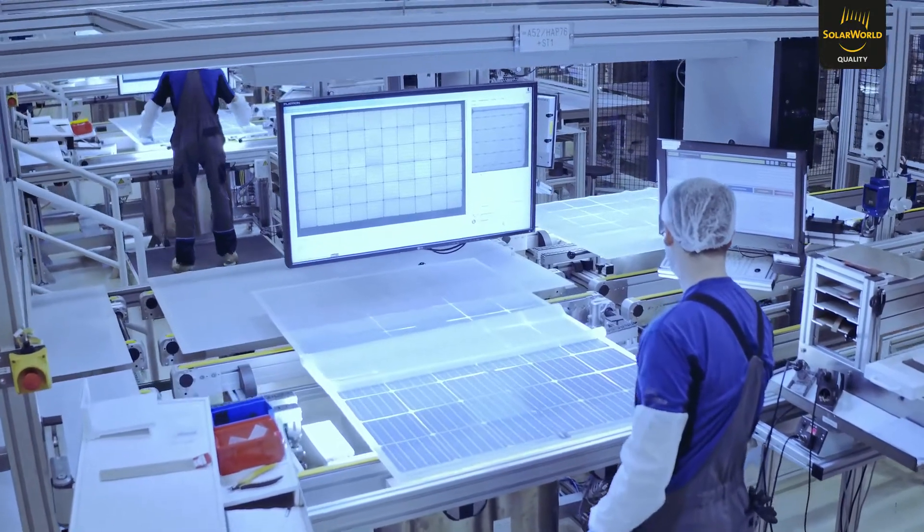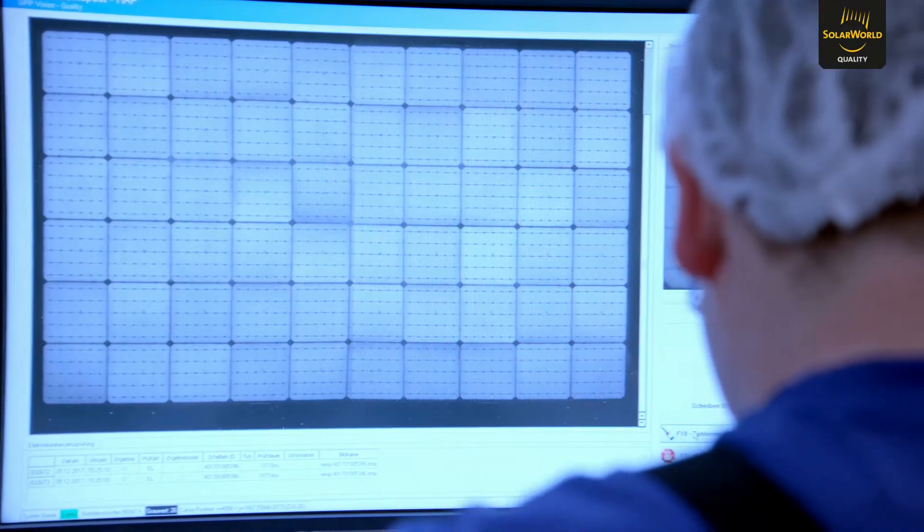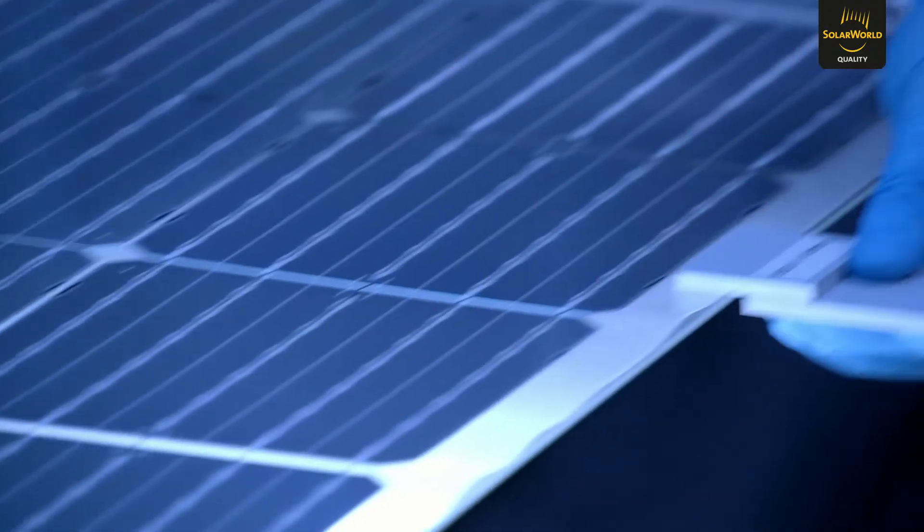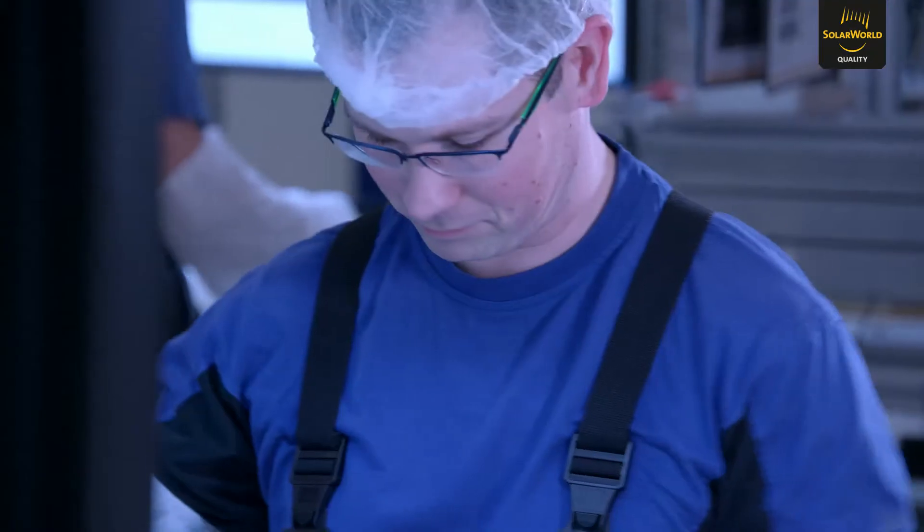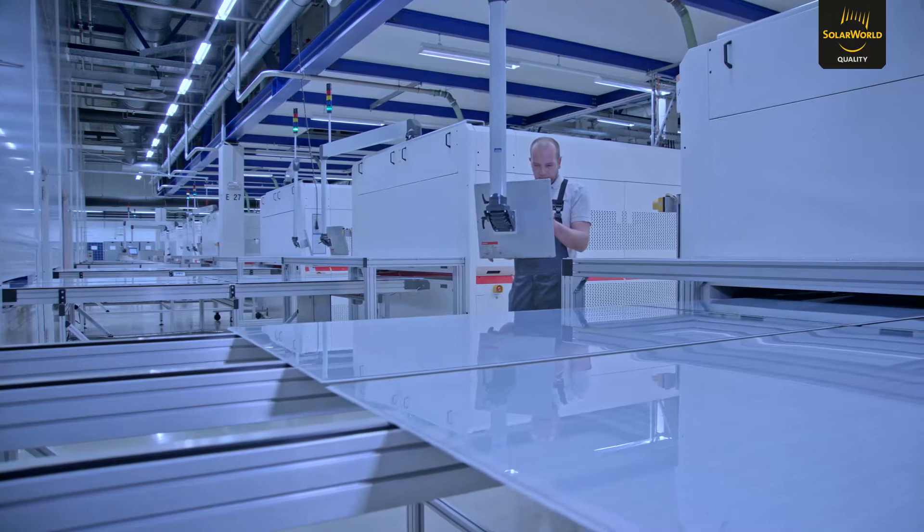This is followed by further testing procedures such as electroluminescence measurement. During this stage, any cell breakage or faulty solder joints are revealed. Testing ensures the high standards of solar world quality. Only then are the modules approved for their final encapsulation, lamination.